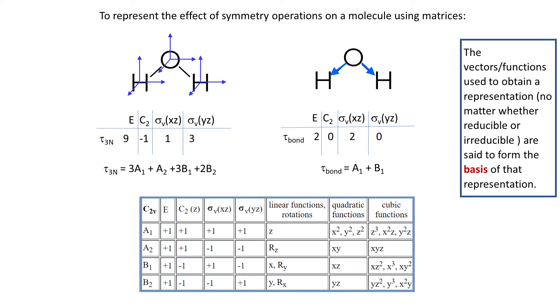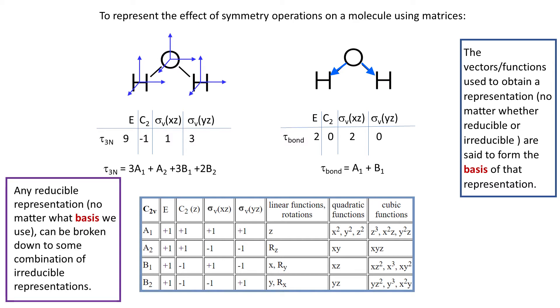So character tables are tables which contain a list of irreducible representations for a particular point group. Any reducible representation, no matter what basis we use, can be broken down to some combination of irreducible representations.